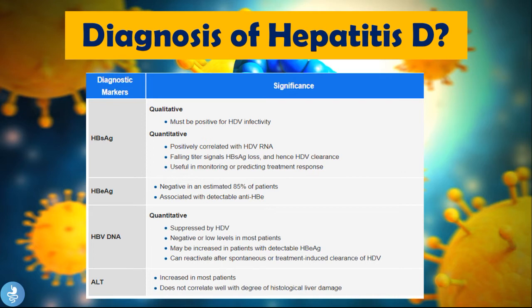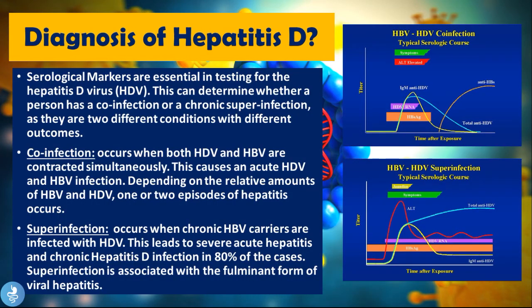If the liver is undergoing structural changes — or in chronic cases, fibrosis — and is unable to perform its daily tasks, the liver will release enzymes like ALT, AST, and GGT as a kind of distress signal. These levels do not necessarily correlate with the degree of histological liver damage — they can be highly elevated with very little inflammation, or relatively low despite significant inflammation and fibrosis.